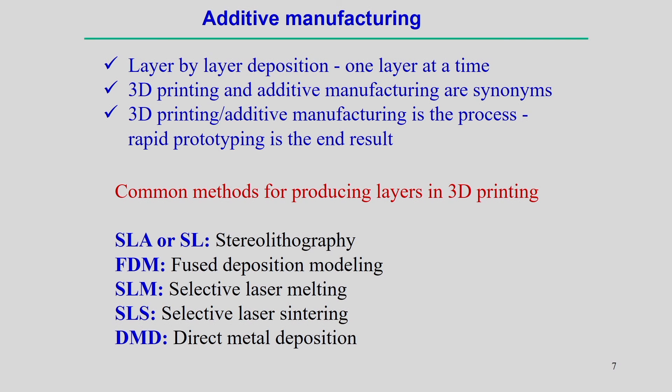Common methods for producing layers in 3D printing include: SLA (stereolithography), which is a very old process; FDM (fused deposition modeling); SLM (selective laser melting); SLS (selective laser sintering); and DMD (direct metal deposition). Most additive manufacturing technology development revolves around these methods, and almost all can be used for either polymeric or metallic materials.